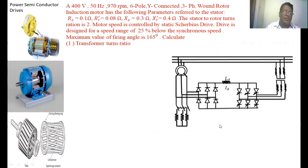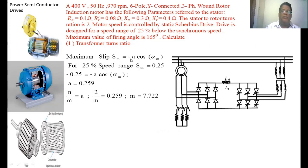We know this is the circuit diagram for the Scherbius drive. Maximum slip Sm = -a·cos(αm). The speed range is 25%, so slip for the induction motor is 0.25. Substituting the values, we get a = 0.259, where a = n/m. Here n is the stator to rotor turns ratio of the induction motor, and m is the primary to secondary turns ratio of the transformer. Given n = 2, substituting that value, we calculate m = 7.722.